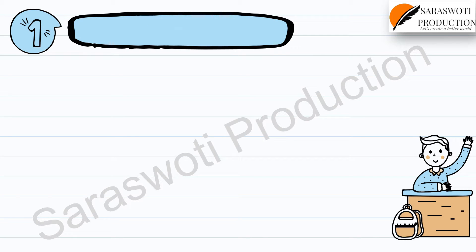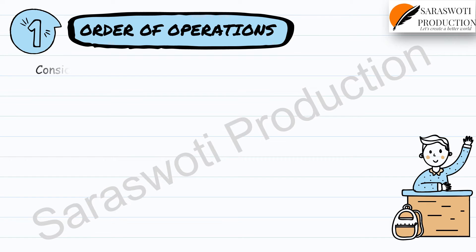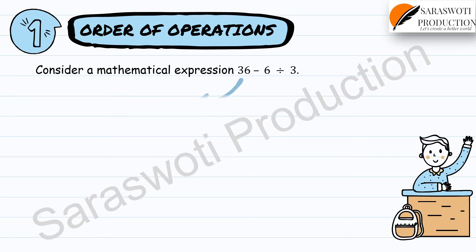First, we have the order of operations. Consider a mathematical expression: 36 minus 6 divided by 3. If you subtract 6 from 36 and then divide the result by 3, we get 36 minus 6 equals 30, and 30 divided by 3 is equal to 10.